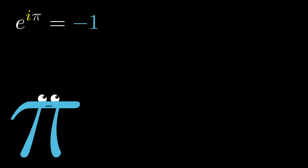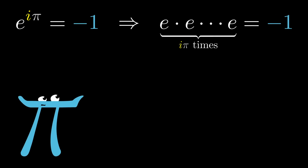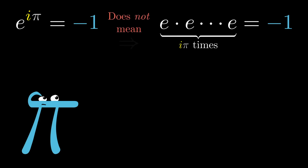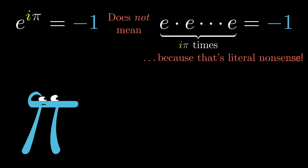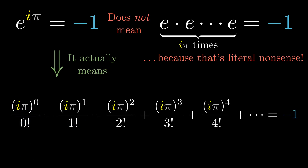Nevertheless, something might still feel immoral about putting an imaginary number up in that exponent, and you would be right to question that. What we write as e to the t is a bit of a notational disaster, giving the number e and the idea of repeated multiplication way more emphasis than they deserve. But my time is up, so I'll spare you the full rant until the next video.